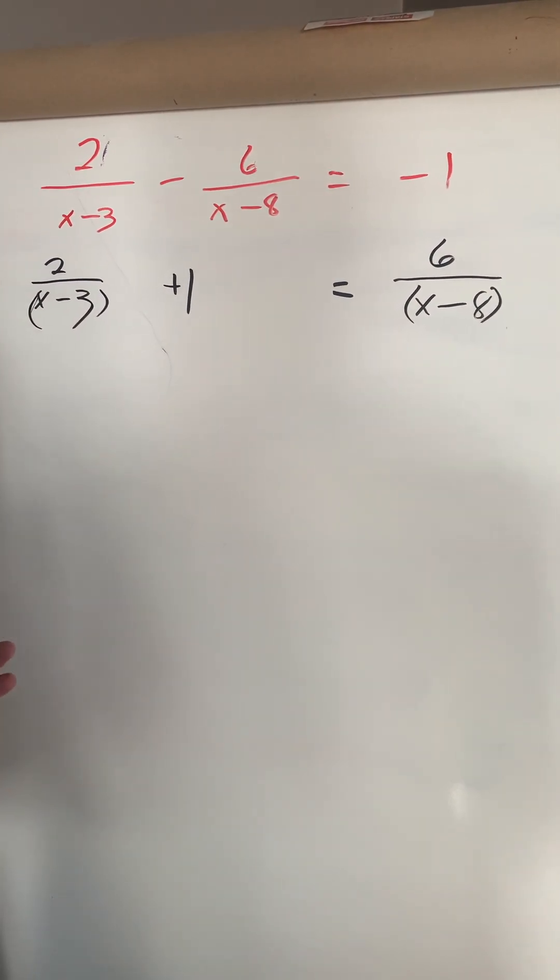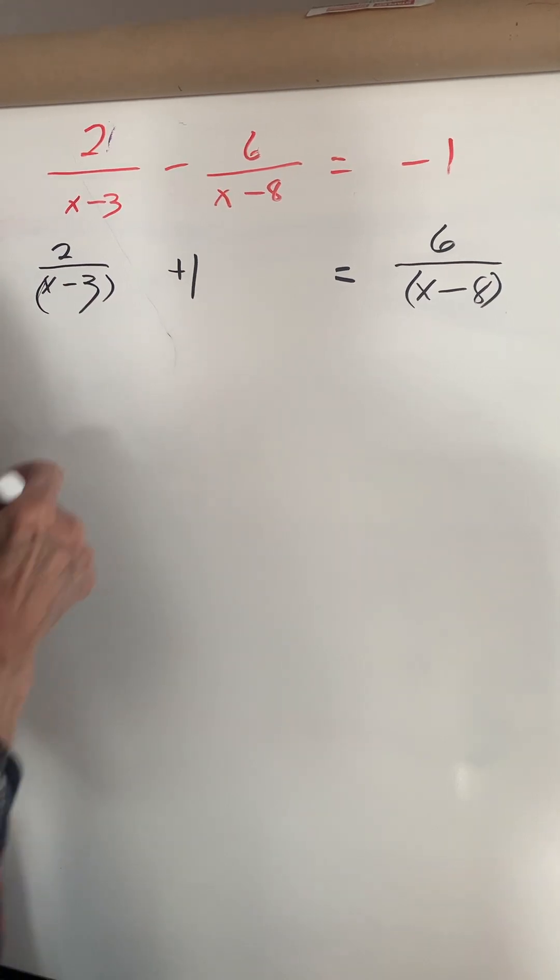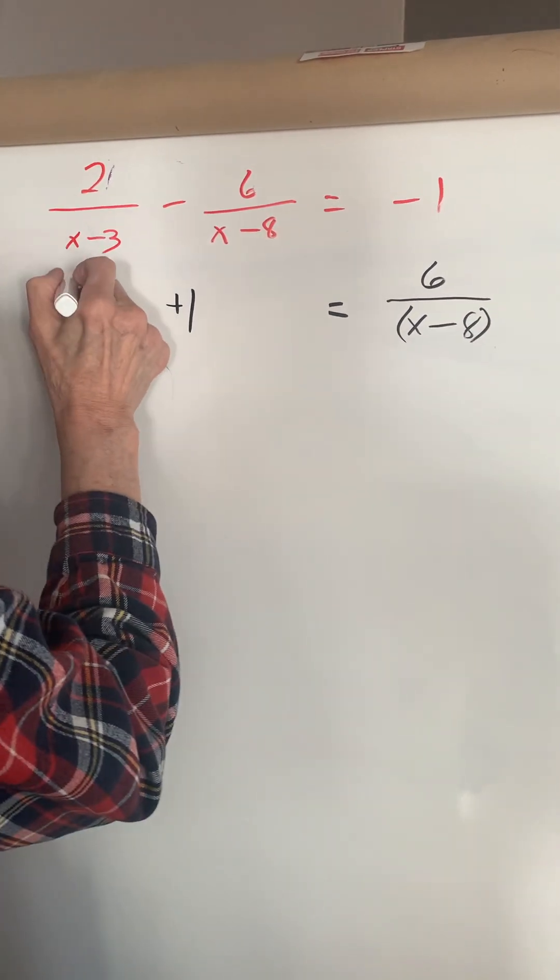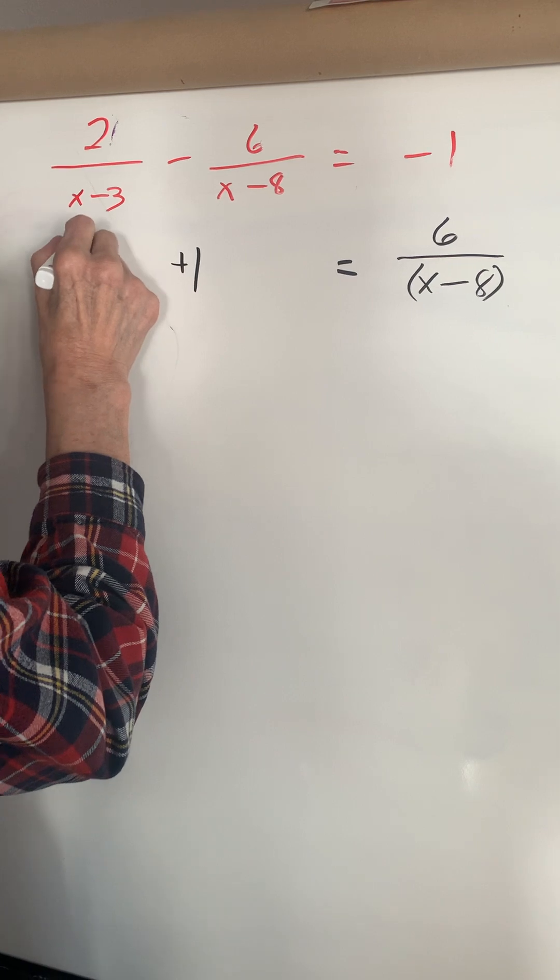Now we're going to get rid of the x minus 3, and we have three terms, so it's going to be x minus 3, x minus 3, and x minus 3.